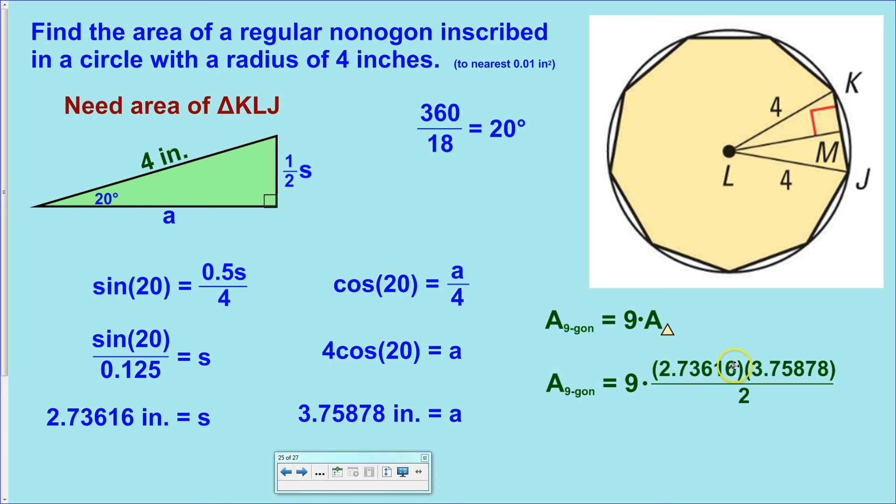In this case, our base is the side. Our height is the apothem, or vice versa. Well, I suppose there's really only one way to look at that, the way we set it up. And then divide by two. And then we need nine of them. So, we multiply that by nine. Pop that all into the calculator. And you get 46.28 square inches. Awesome problem.